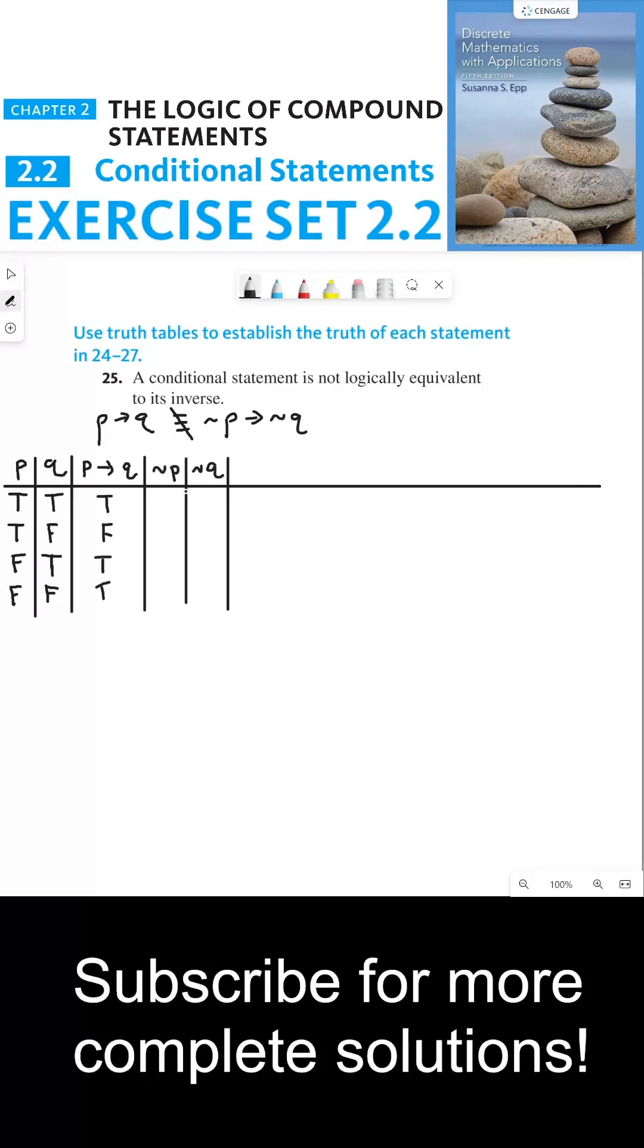Next, we can find the truth values for not P and the truth values for not Q. And last, we need to build not P implies not Q.